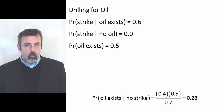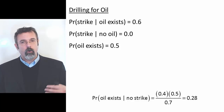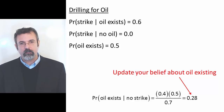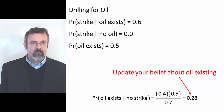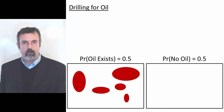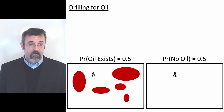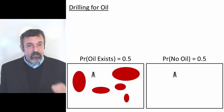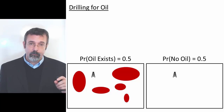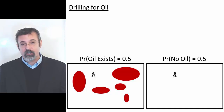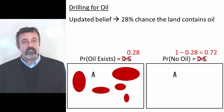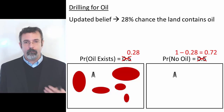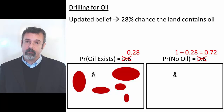That gives us 28%. With this number, we can now update our belief about whether or not the land contains oil. We started off assuming there was a 50% chance that there was oil in the ground. We drilled a well, the well came up dry. We then ran these calculations and concluded that, given that the well came up dry, the probability that the land contains oil is now 28%, not 50%. We call this Bayesian updating — we update our belief about a probability based on things we observe.